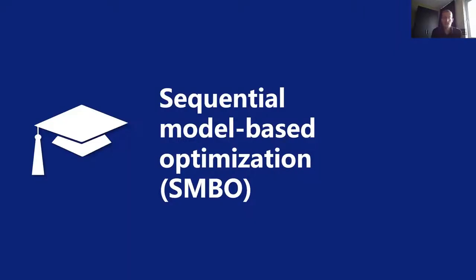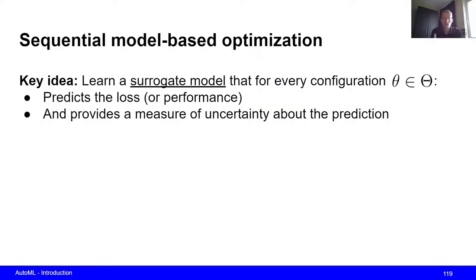So this is the idea of sequential model-based optimization, or SMBO in short. So what we want to do is we want to learn a surrogate model that predicts for every configuration, so for every hyperparameter vector theta, predicts the performance, so the loss, as well as gives us a measure of uncertainty about our prediction.